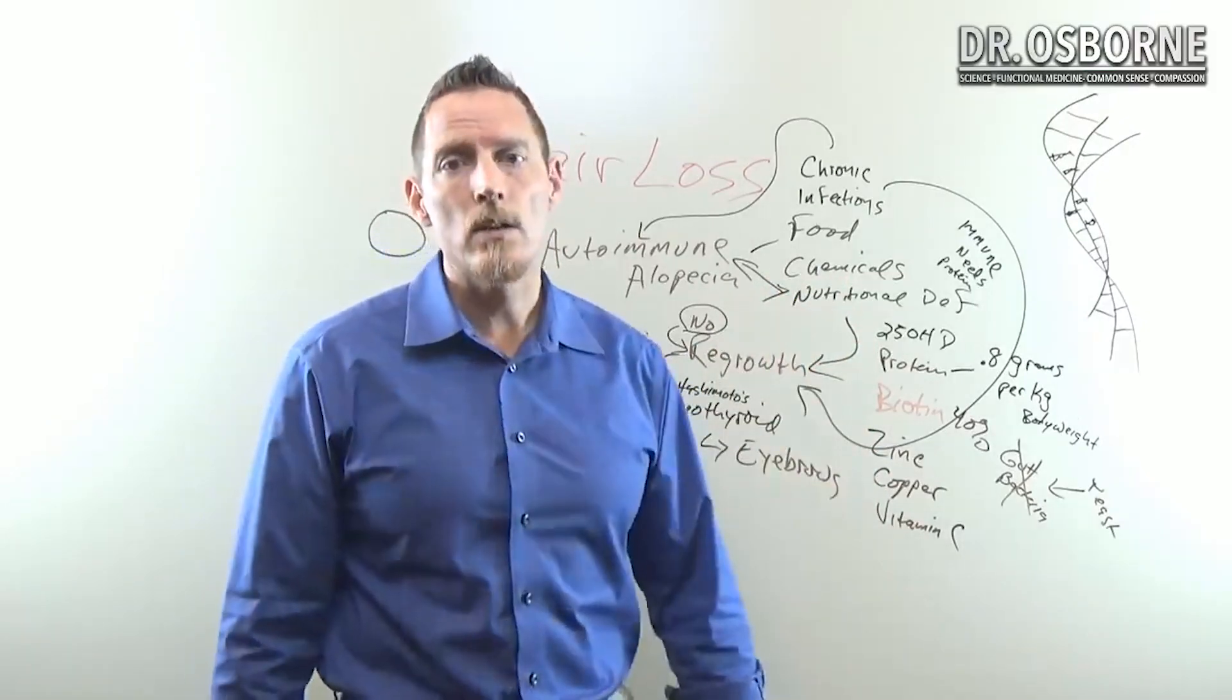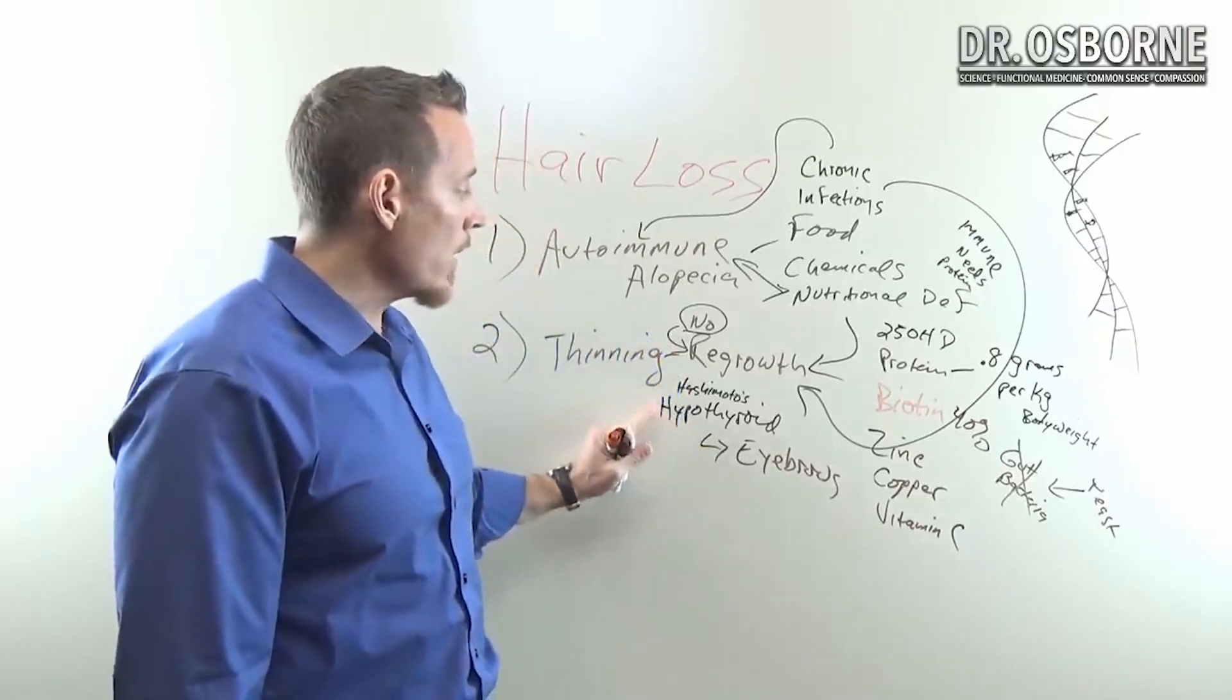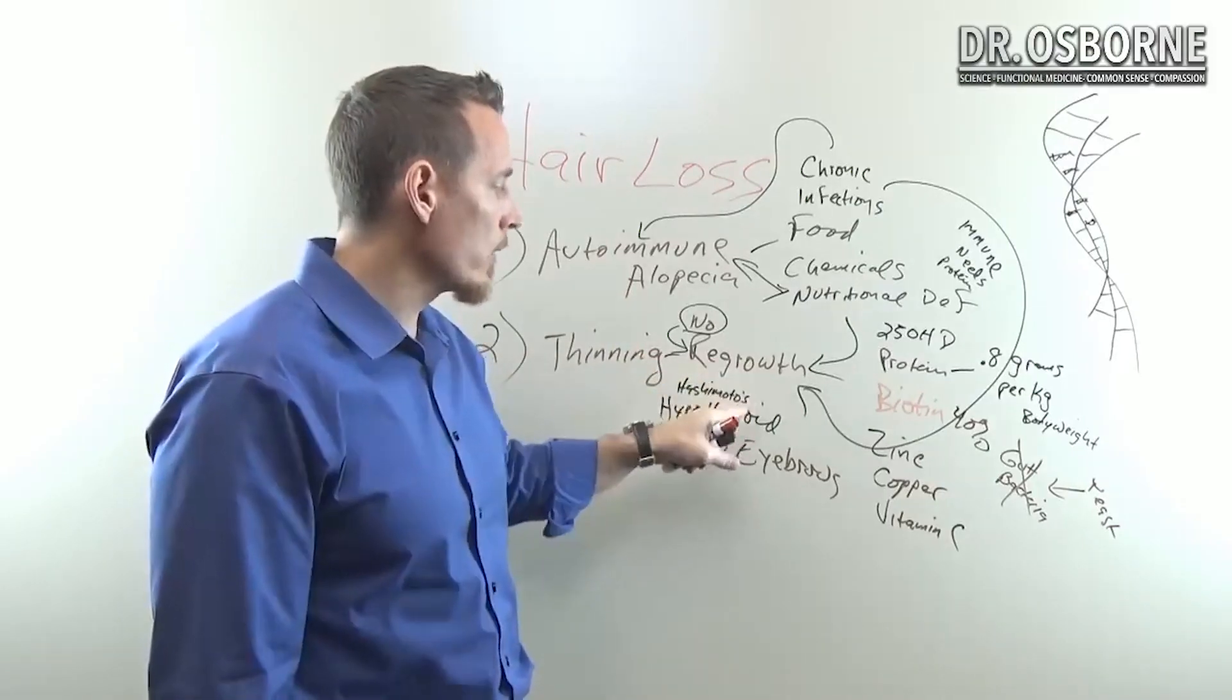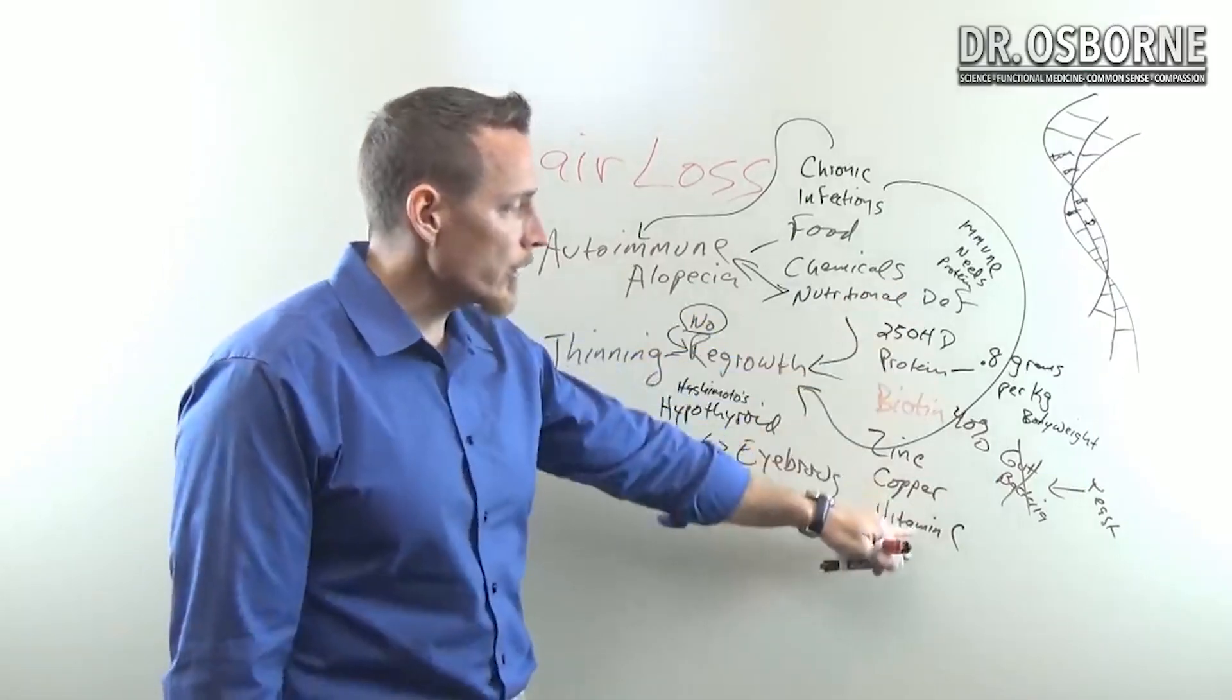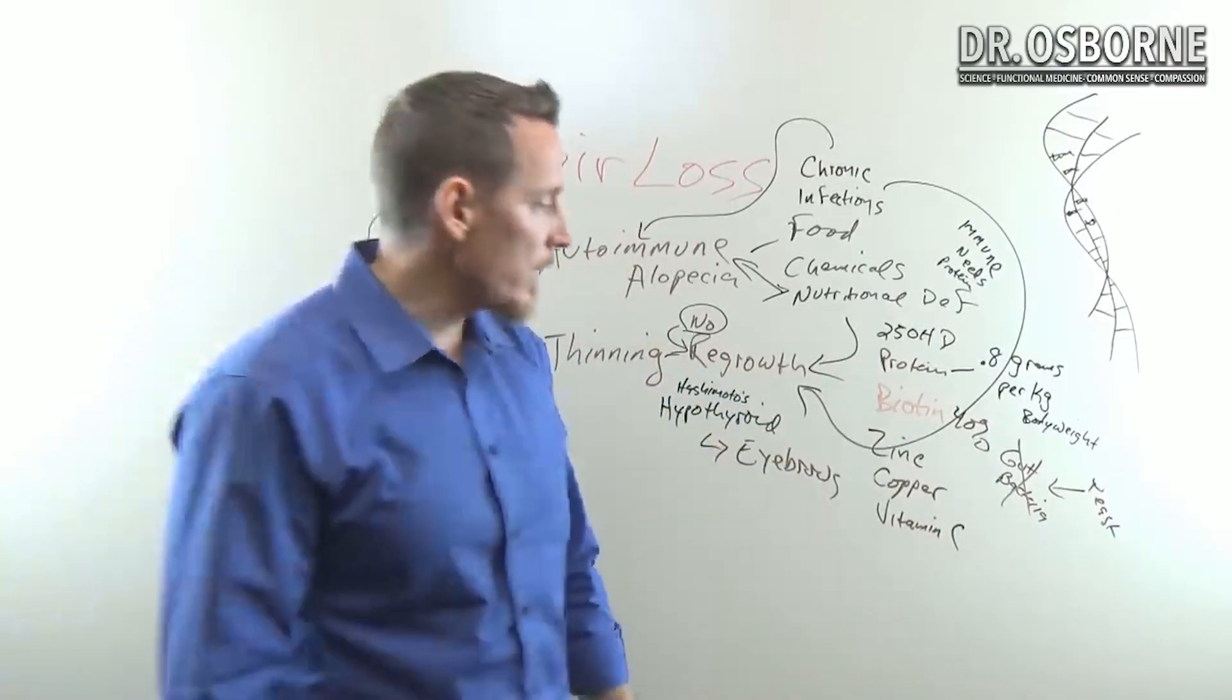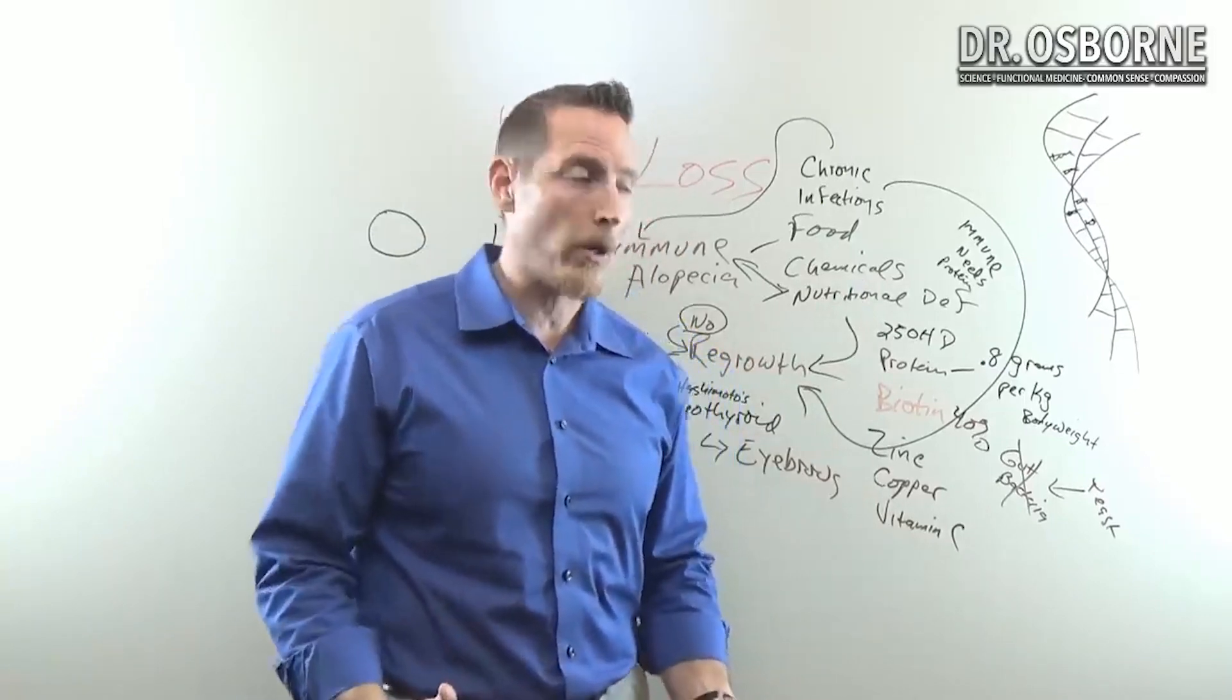I mentioned before that Hashimoto's—autoimmune hypothyroid—could cause the thinning or the lack of regrowth. But there are a couple of other things that can happen nutritionally that are indirectly related to hair loss. Think of these things as directly linked to hair loss—a deficiency will cause your hair to thin and not to grow as well.